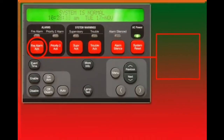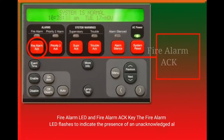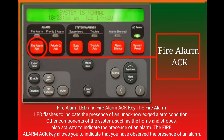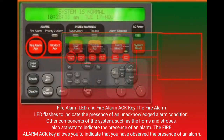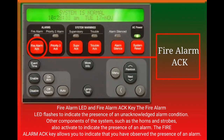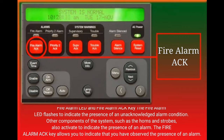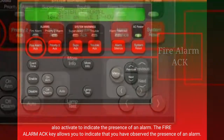Fire Alarm LED and Fire Alarm Ack Key. The Fire Alarm LED flashes to indicate the presence of an unacknowledged alarm condition. Other components of the system, such as the horns and strobes, also activate to indicate the presence of an alarm. The Fire Alarm Ack Key allows you to indicate that you have observed the presence of an alarm.